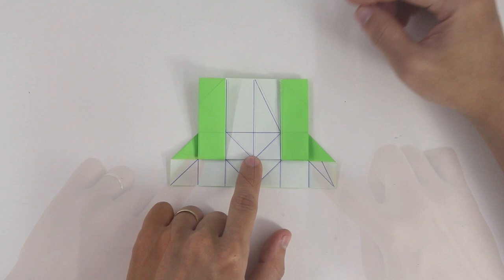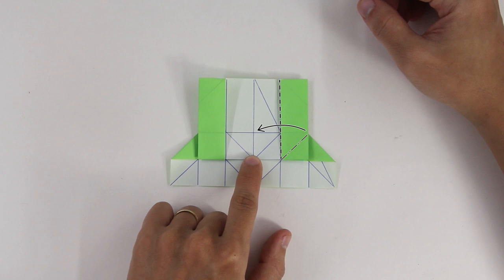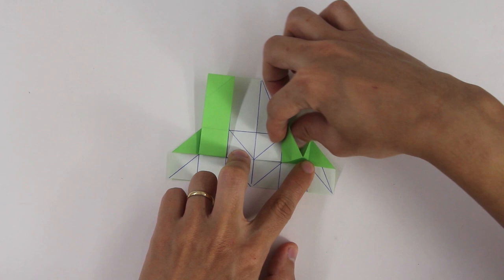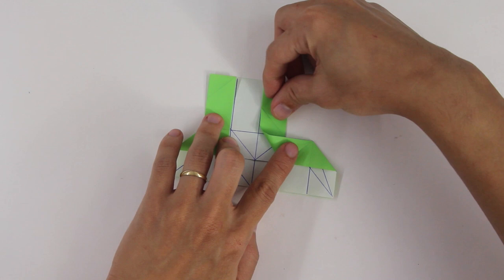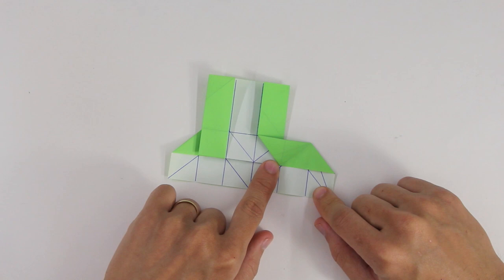Now, do these two folds, pulling this layer to the middle. Like this.